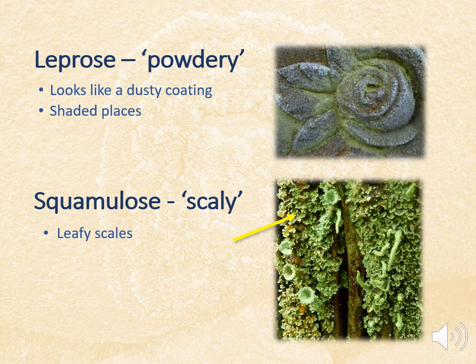Leprose lichens could perhaps be seen as a type of crustose lichen — they have a very characteristic dusty or powdery appearance and you could be forgiven for confusing them with algae. Squamulose or scaly lichens are made up of numerous leaflets and are very much a feature of the Cladonia group. You'll often see the little podetia or cup-like structures arising from squamules at the base, and sometimes squamules along the podetia. The podetia don't always appear, so you may just see a mass of squamules.